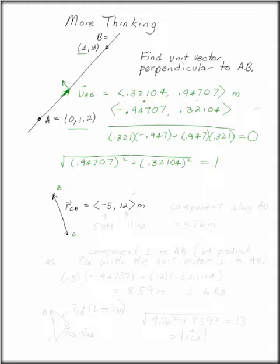The other thing we found is that the component of rcb along AB was 9.76 meters.